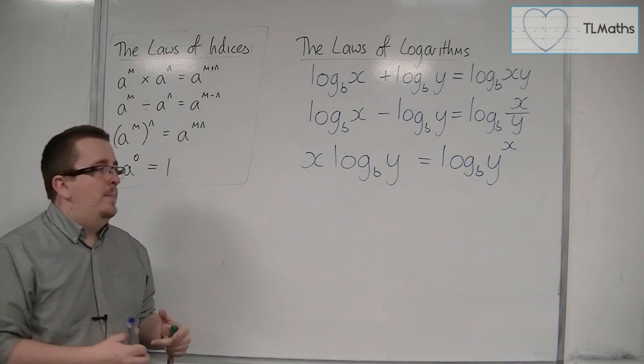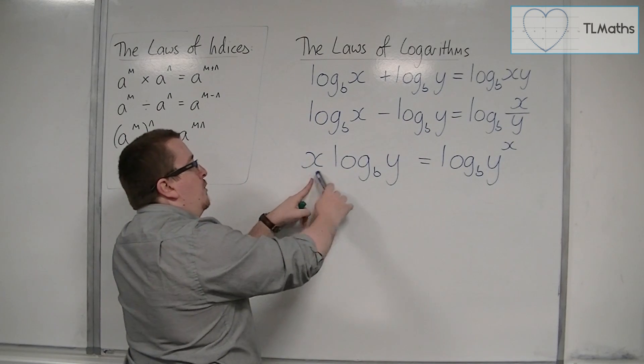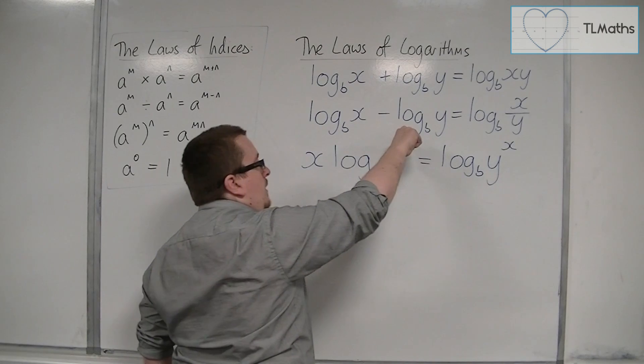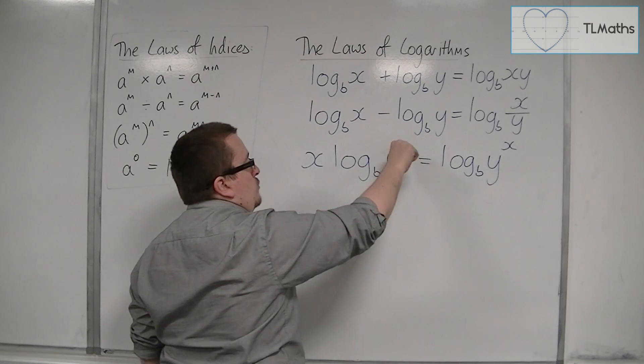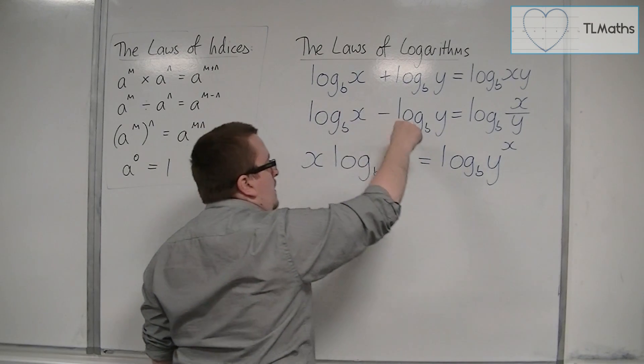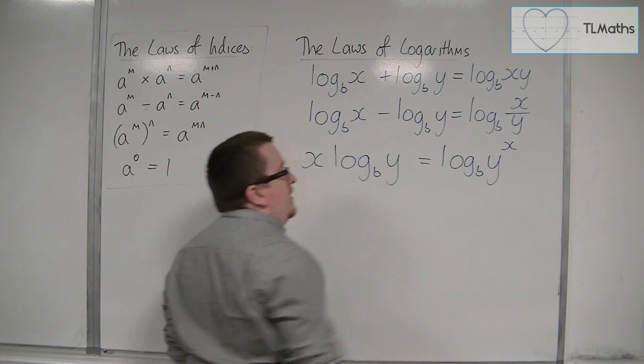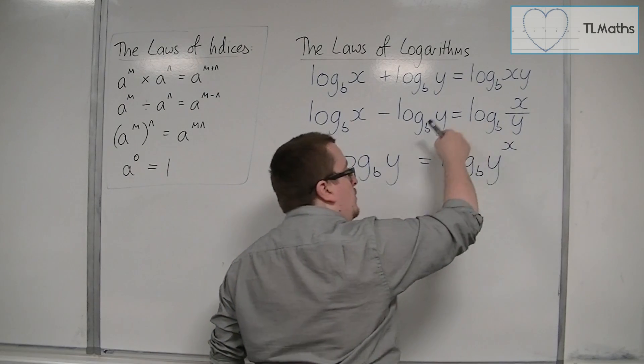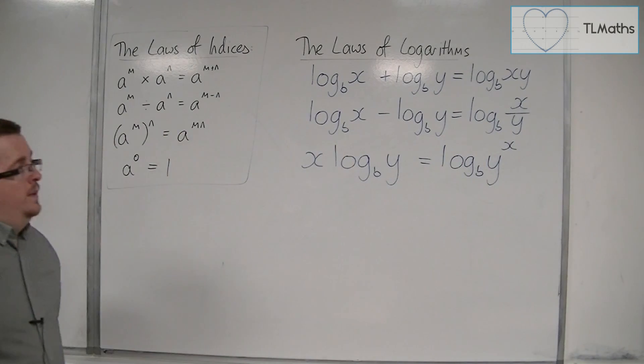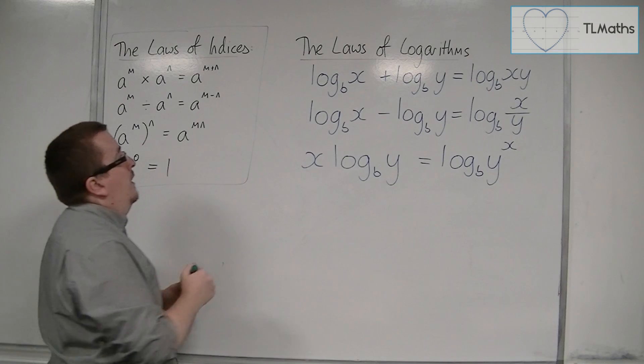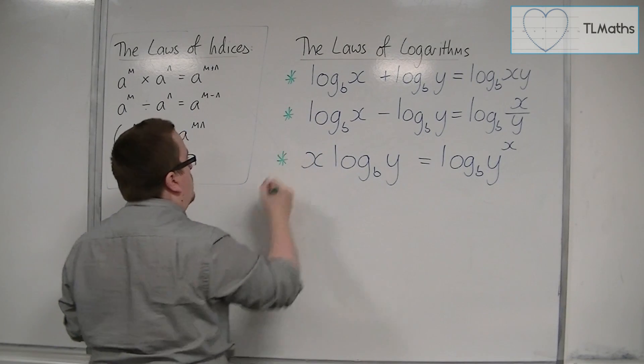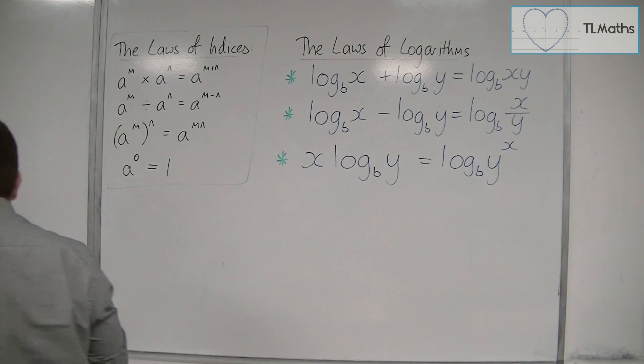Effectively, the number in front of the logarithm can be brought up to the power of what is within the logarithm. The x can come up as a power, and vice versa. If you have a power of x, it can be brought down to the front. These are three very important laws of logarithms to remember.